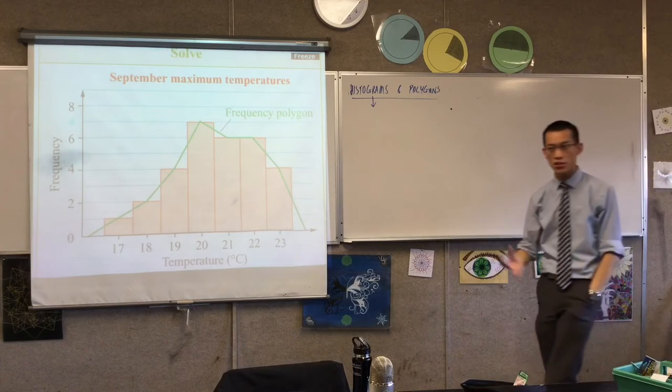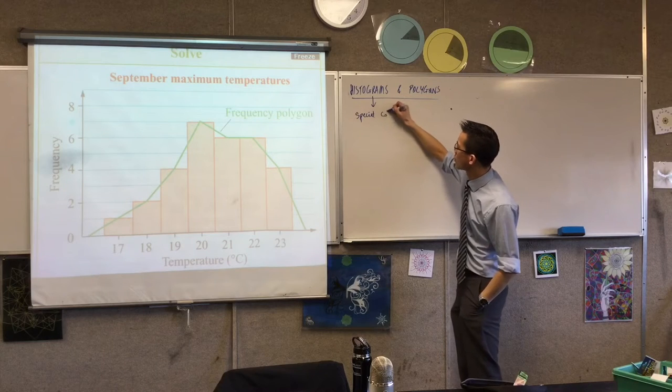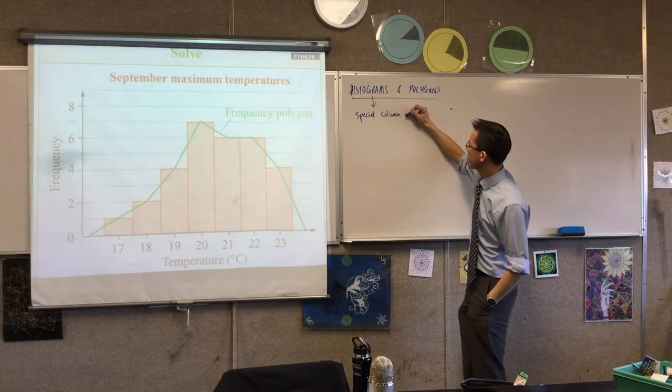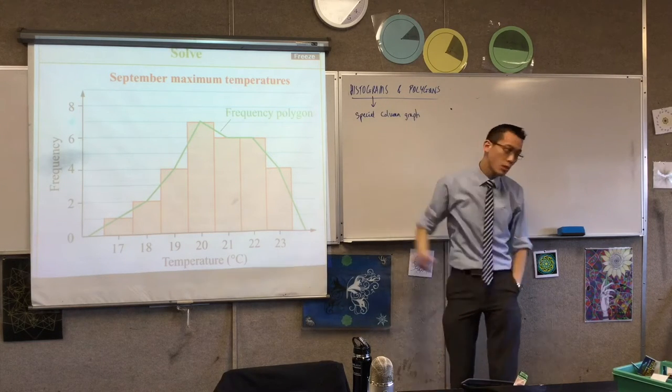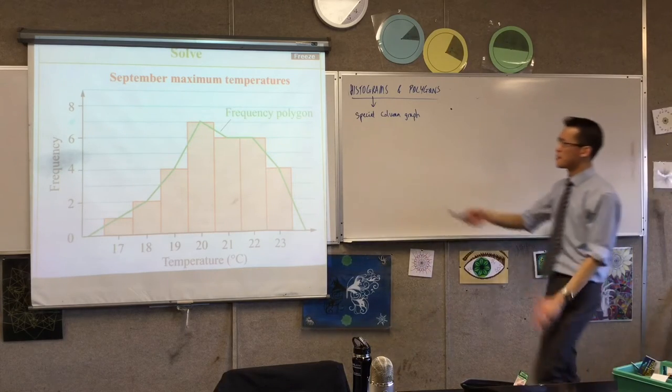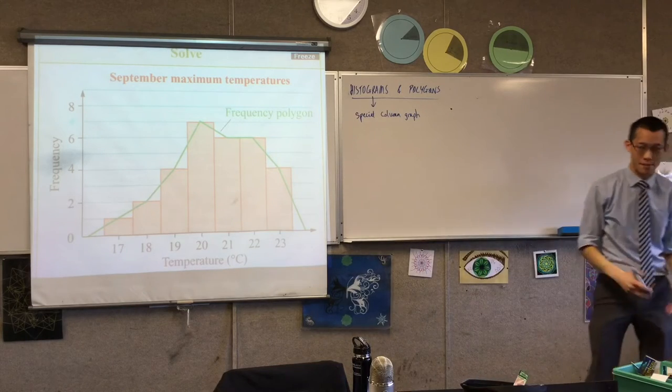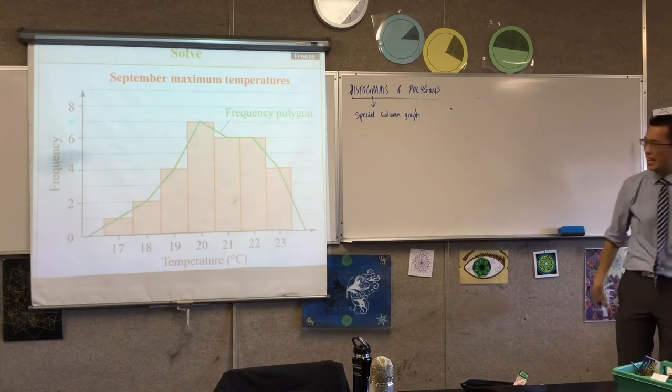A histogram is just a special kind of column graph. In fact, that's basically what histogram means. I went and dug it up. It has to do with this part here, this histo prefix. It has to do with anything that's upright, like for example the masts and sails of a ship.